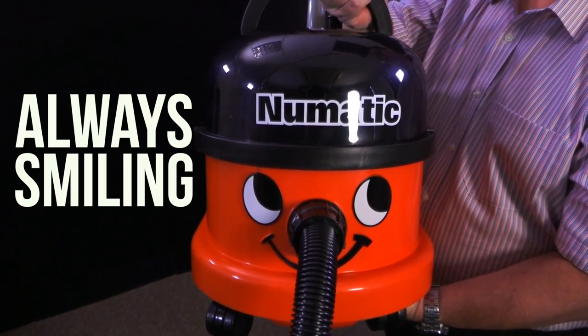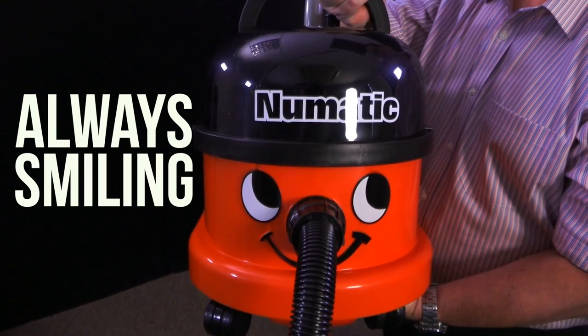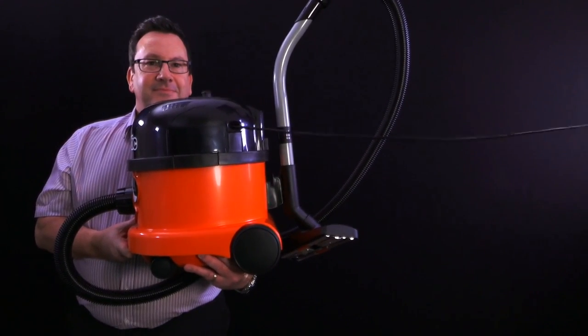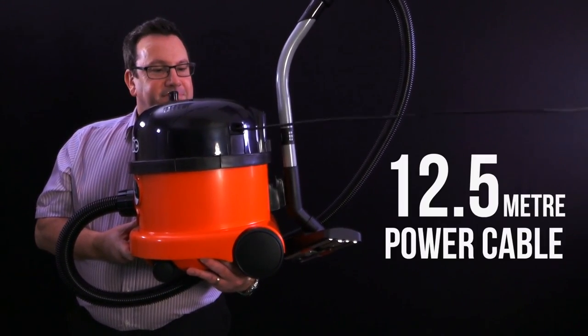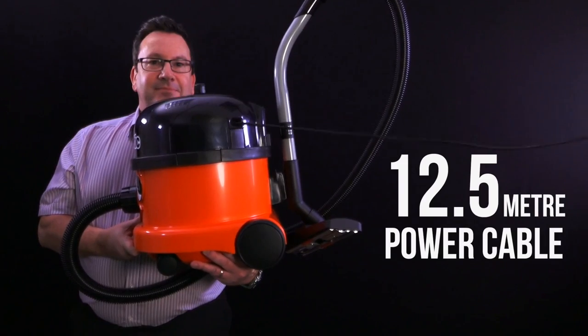He looks just like his younger brother and always has a smile on his 9 litre capacity face. But the NRV200 has the added benefit of a 12.5 metre power cable which lets you vacuum further.